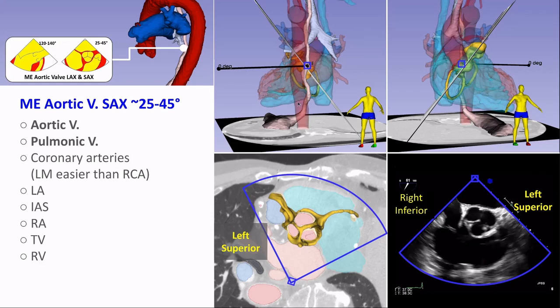We start imaging at the aortic valve short axis, obtained at somewhere between 25 and 45 degrees — though all angles are approximate. Here we see the aortic valve in short axis and the pulmonic valve in long axis. This is a good view for imaging the coronary arteries, with the left main being much easier to see than the RCA. You can also see the left atrium, right atrium, interatrial septum, tricuspid valve, and pulmonic valve.